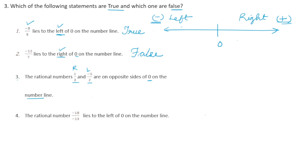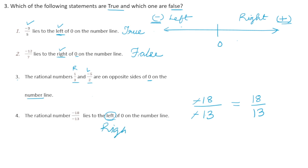Statement 4: the rational number minus 18 upon minus 13 lies to the left of 0 on the number line. This is quite tricky — minus 18 by minus 13 looks negative but is actually a positive number, because both the numerator and denominator have minus signs which cancel each other, leaving 18 by 13, a positive number. So this statement is FALSE.